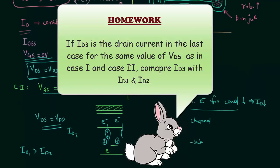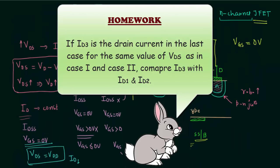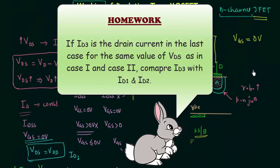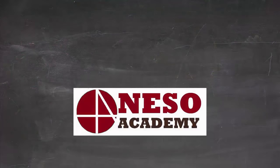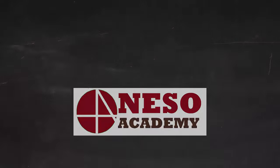This is the complete working of depletion type MOSFET across all three cases. If you have any doubt about the three cases we discussed, you may ask in the comment section. In the next lecture, we will plot the transfer and drain characteristics of N-channel depletion type MOSFET.